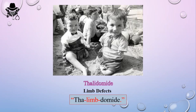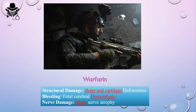Next we have warfarin. Whenever I think about warfarin, I think about war — and this agent is actually causing a war on the baby. It causes structural damage, bone and cartilage deformities, fetal cerebral hemorrhage, and in some cases nerve damage like optic nerve atrophy. So it's truly a war on the fetus.